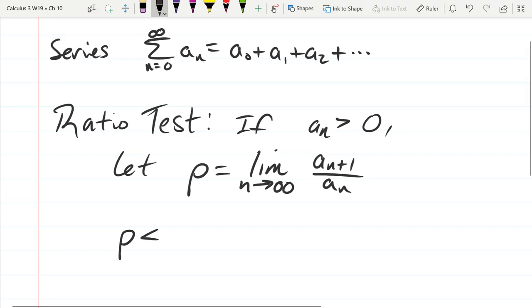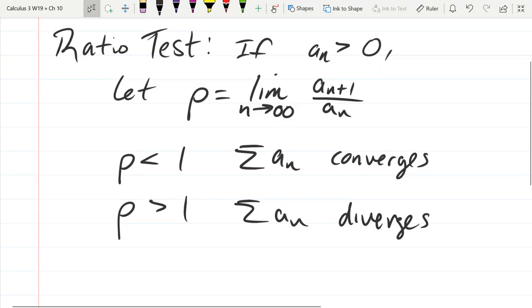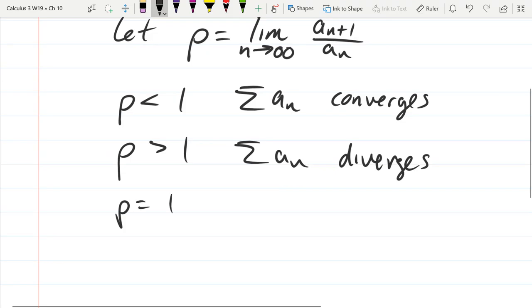So if ρ is less than one, then summation aₙ converges. If ρ is greater than one, summation aₙ diverges. And what did we get if ρ equals one? Inconclusive. So what did we do in that case? Use different ones besides the root test. So if we get inconclusive, we have to use another test.